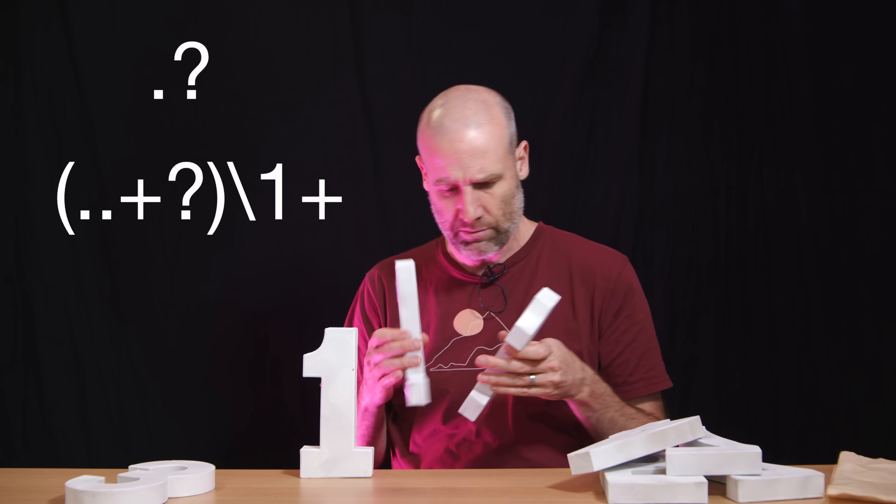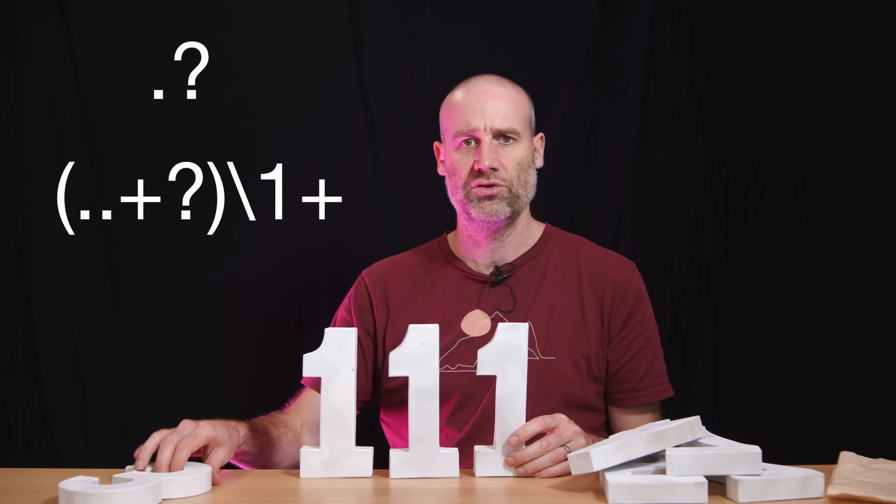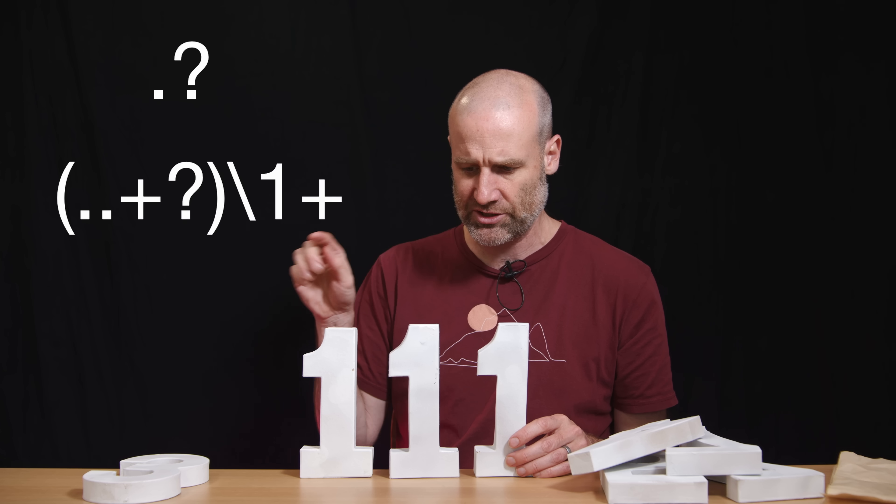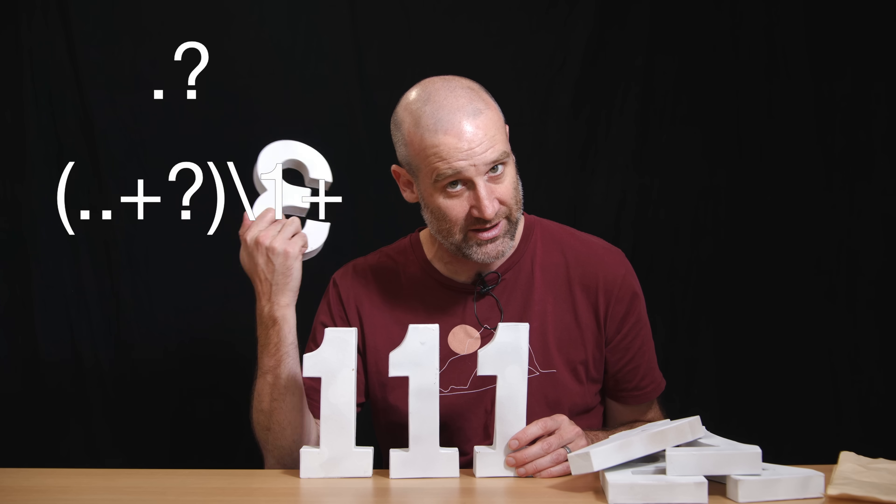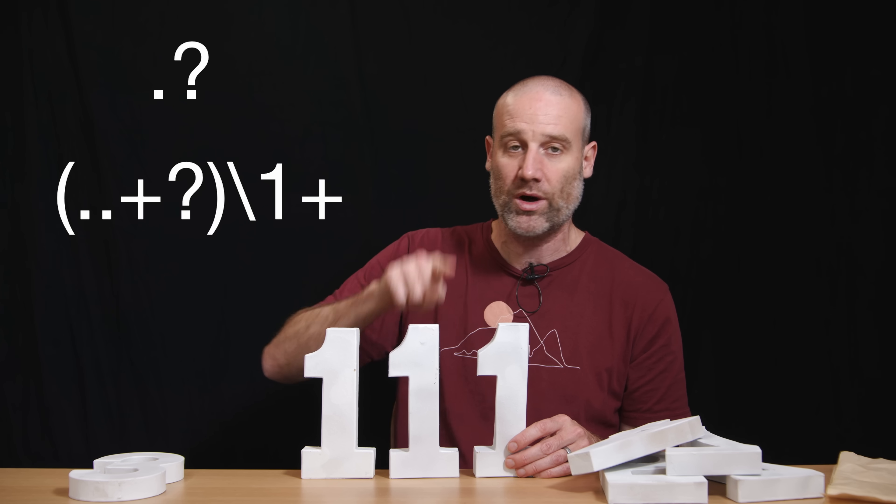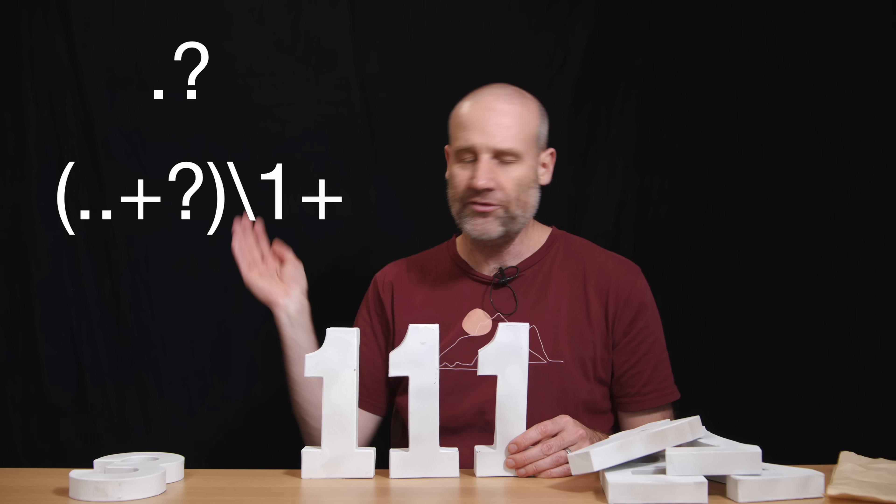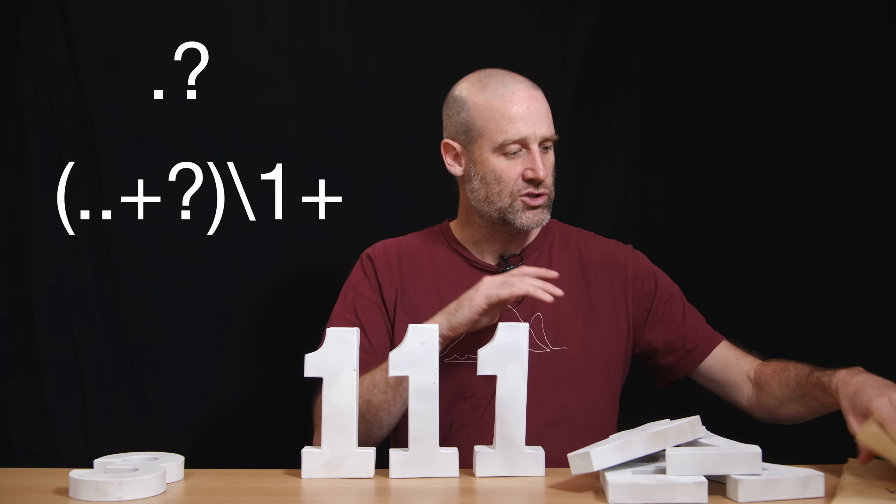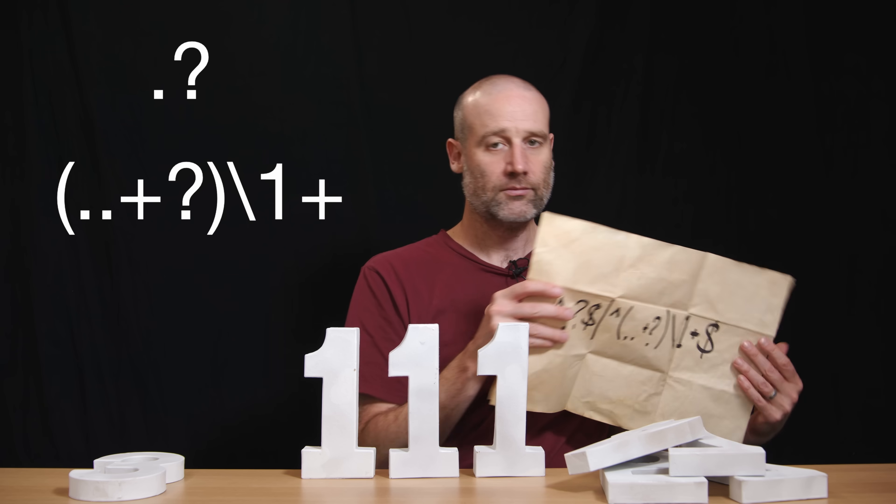Whatever it is you're sending in, you multiply it by the character one. So three would be three times the character one. So that would actually just become one, one, one. So we don't actually process the number we're interested in. We process a string, which is a tally of that number. So we wouldn't send in number three. We would send in the string, which is the characters one, one, one. Or if we were checking 15, we would send in 15 ones and so on.